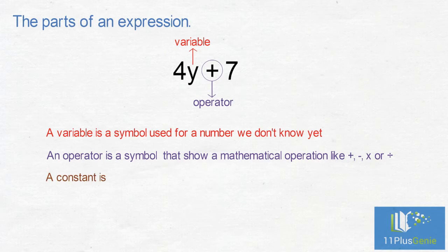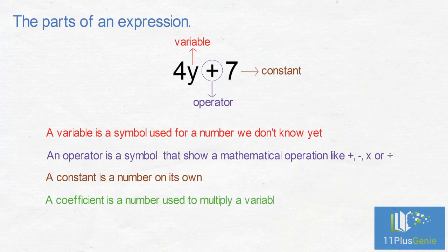A constant is a number on its own. In this example, 7 is a constant. A coefficient is a number used to multiply a variable. In this example, 4 is a coefficient.